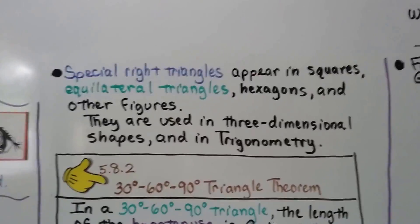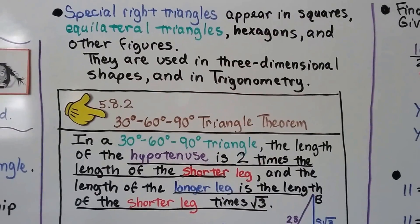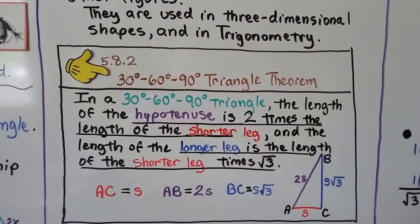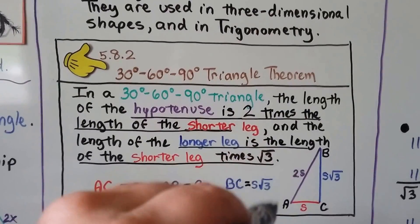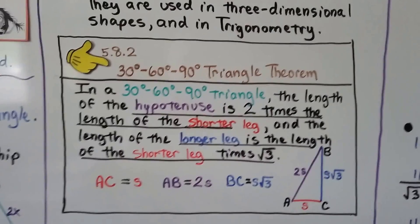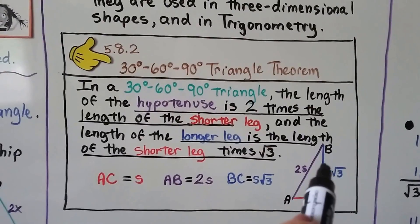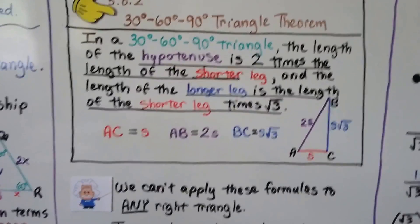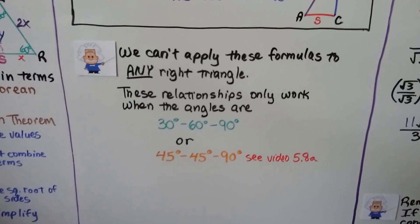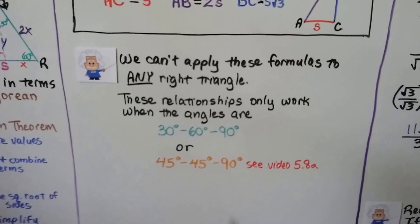Special right triangles appear in squares, equilateral triangles, hexagons, and other figures, and they're used in three-dimensional shapes and in trigonometry. Here's our theorem: in a 30-60-90 degree triangle, the hypotenuse is 2 times the shorter leg — so if the shorter leg is s, the hypotenuse is 2s — and the longer leg is s times the square root of 3. These relationships only work when the angles are 30, 60, and 90 degrees, or like in our previous video, 45-45-90 degrees.